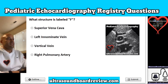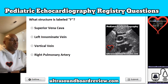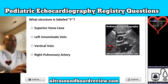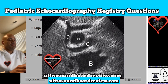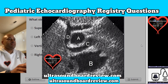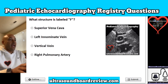Question 16. What structure is labeled F? Is it A, the superior vena cava; B, left innominate vein; C, vertical vein; or D, right pulmonary artery? The answer is B, left innominate vein.